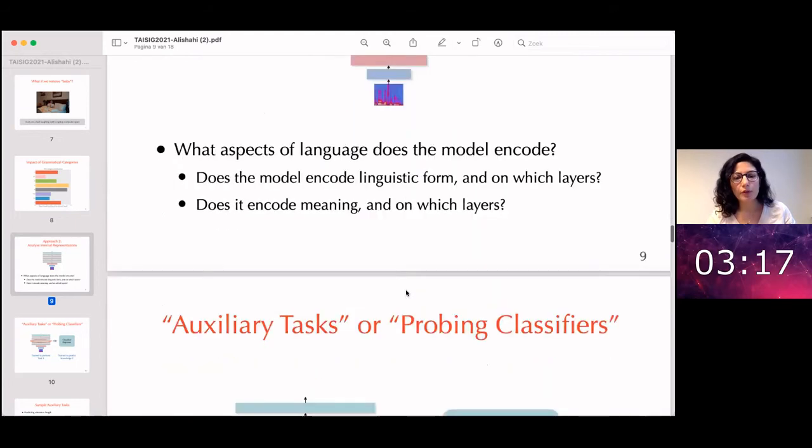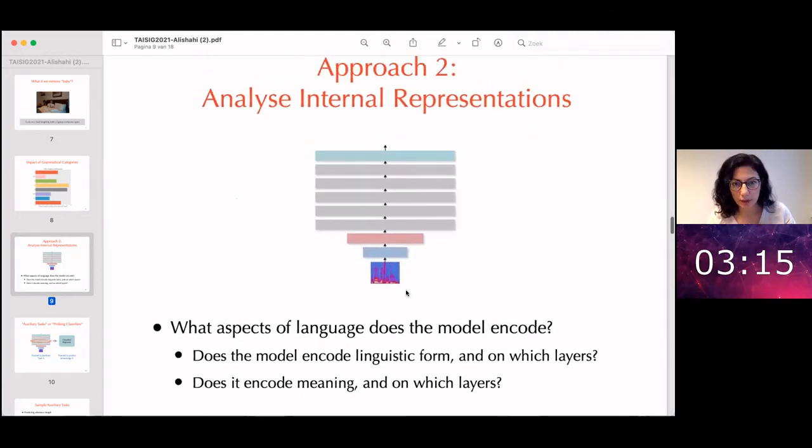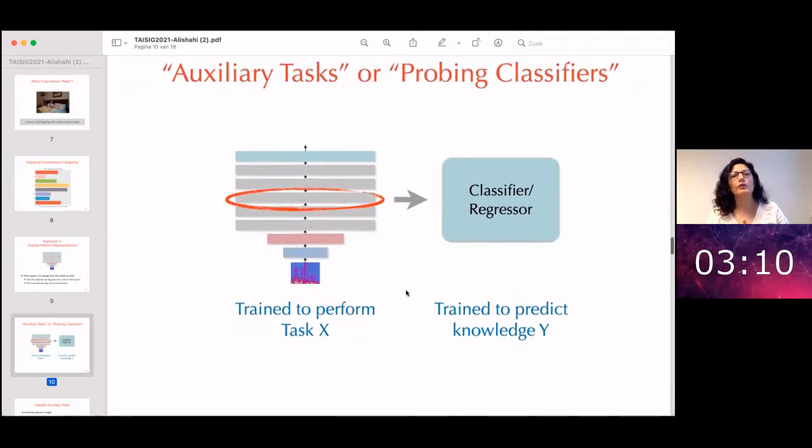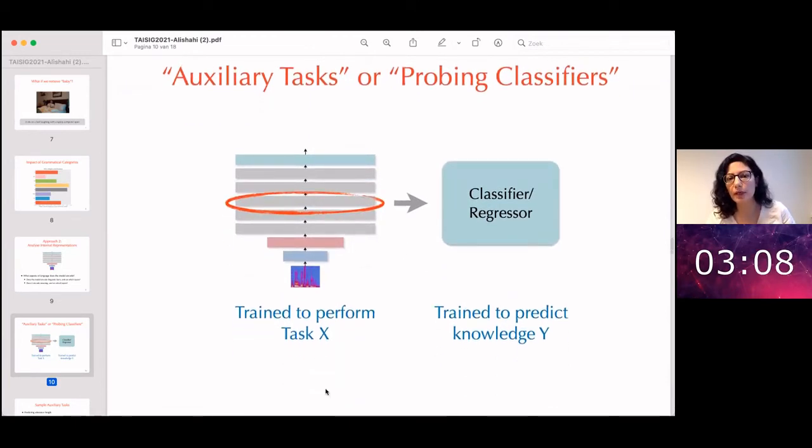One technique that has been widely used is what is typically called auxiliary tasks or probing classifiers. The idea here is that you have this model that you have trained to perform task x, but now you want to know whether this model learns anything or encodes anything about knowledge y. So what you do is you give the original model an input, then you record and extract the activations on any layer of this model.